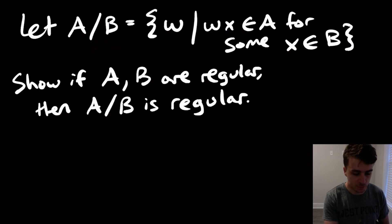And what do I mean by division? That means that we have two languages here, and I'm going to define A divided by B to be the set of all strings w such that for some x in the second language, then wx is in A. So in other words, we're taking strings that are in A and chopping off a bit that belongs into B.